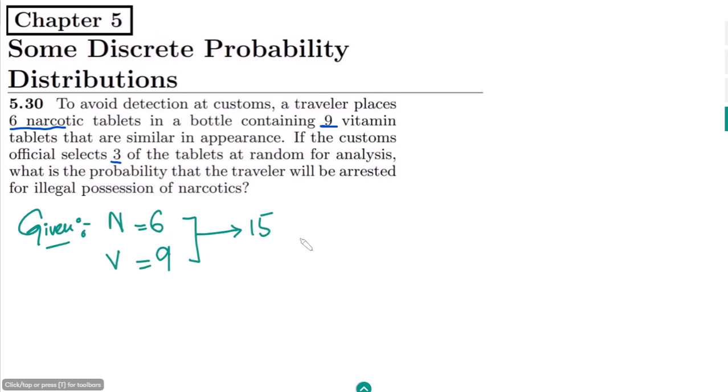These are the number of tablets. When it has been reached to the customs officer, he will select three out of them. If any one of them is the narcotic...